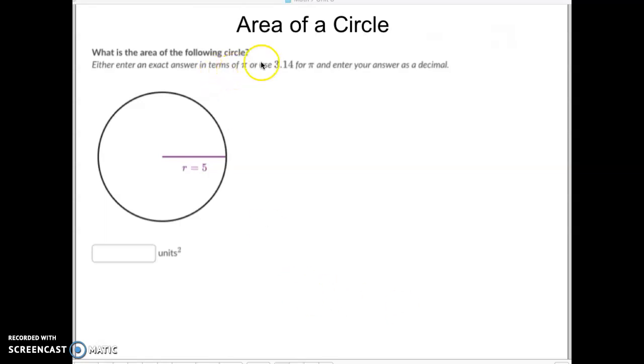In order to find the area of a circle, you need to know another formula. If you remember, for the circumference of a circle, the formula was circumference equals two times the radius times pi, or the diameter times pi. You need to know that formula, just like you have to know the one today.